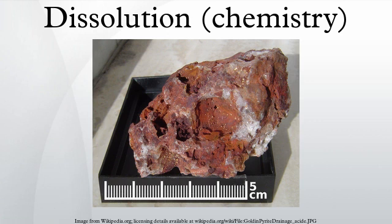The rate of dissolution can often be expressed by the Noyes-Whitney equation or the Nernst and Brunner equation, of the form: dm/dt = A · D/h · (Cs − Cb), where dm/dt is the mass of dissolved material over time, A is the surface area of the interface, D is the diffusion coefficient, h is the thickness of the boundary layer, Cs is the mass concentration at the surface, and Cb is the mass concentration in the bulk of the solvent. For dissolution limited by diffusion, Cs is equal to the solubility of the substance.